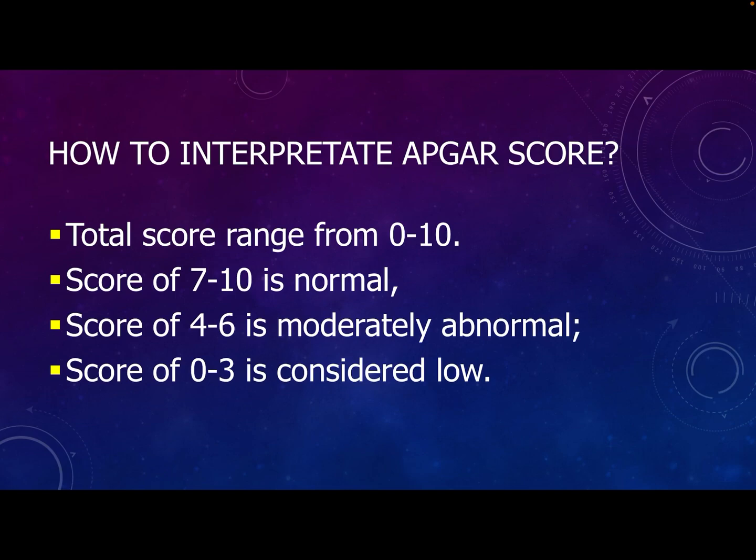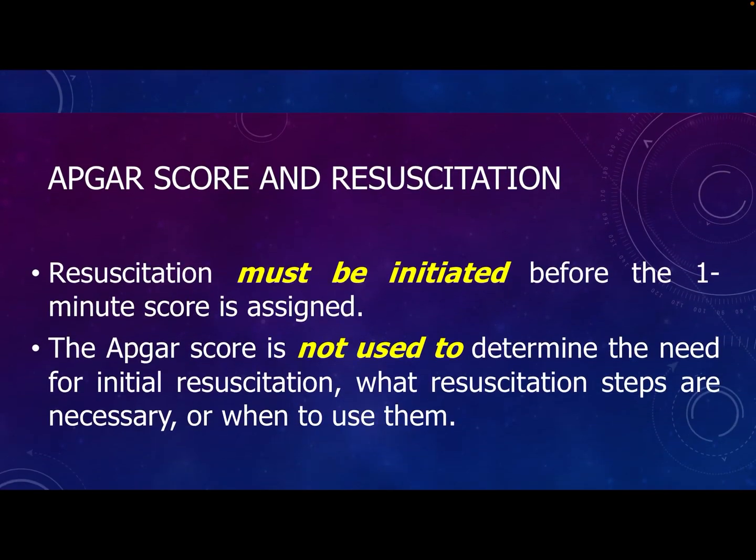The total score ranges from zero to ten. With increasing score, the condition is better. A score of seven to ten is normal. A score of four to six is moderately abnormal. And a score of zero to three is considered low.